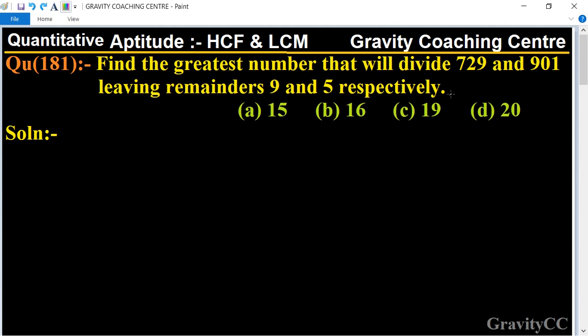First of all, we find the difference between the numbers and remainders. 729 minus 9 equals, and 901 minus 5 equals 720.